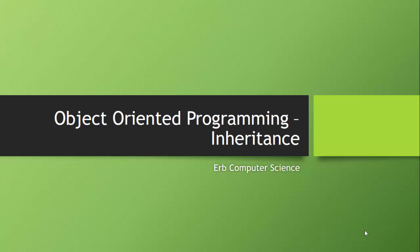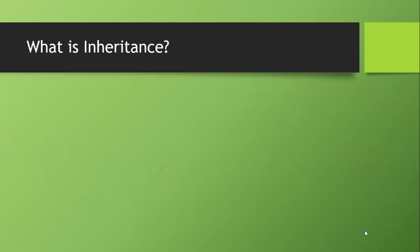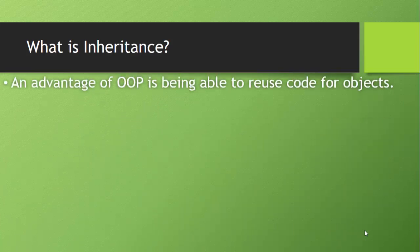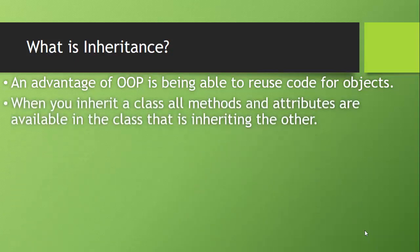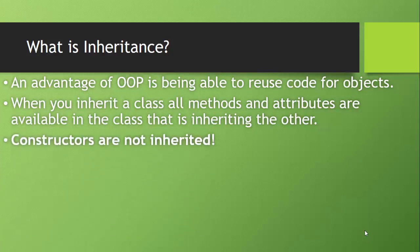In this video, we continue with object-oriented programming, this time talking about inheritance. So what is inheritance? An advantage of object-oriented programming is being able to reuse code for objects. When you inherit a class, all those methods and all those attributes of the class are available in the class that is inheriting the other. Now, the constructors are not inherited. There is a major misconception that constructors are inherited, and they are not. Those constructors of the class that is being inherited is actually called, and we'll be talking about that and proving that today.